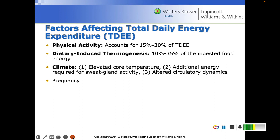Remember bolded words — here's a great example. Physical activity accounts for around 15 to 30% of your total daily energy expenditure, and that can vary depending on the type of physical activity. For example, doing yoga and stretching expends far less energy than a total body lift. You can track your heart rate to account for the amount of energy you expend. Next, dietary-induced thermogenesis accounts for 10 to 35% of the ingested food energy.